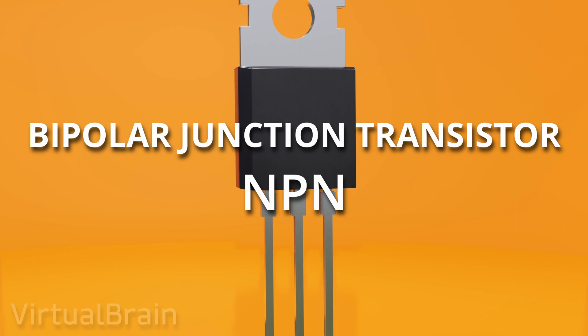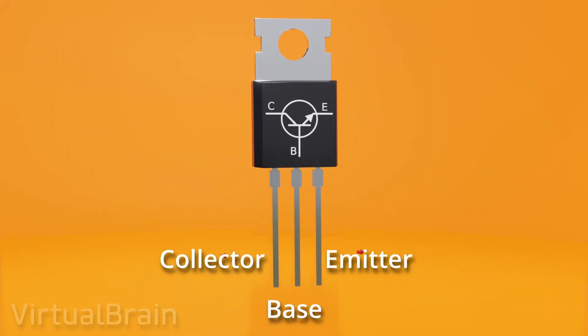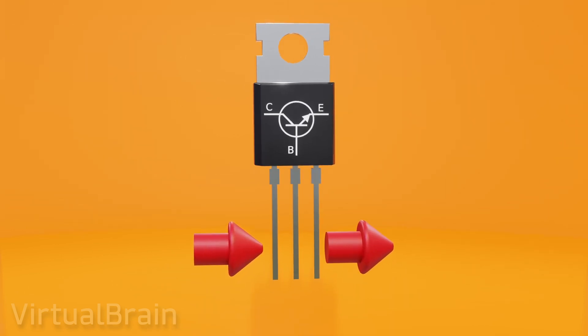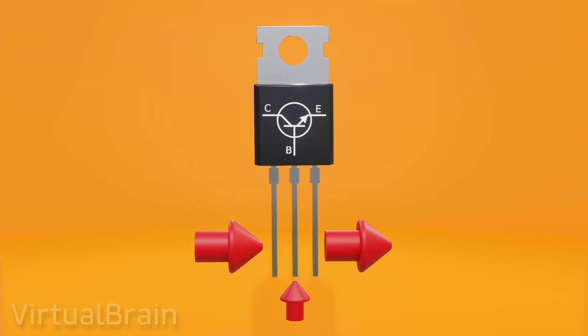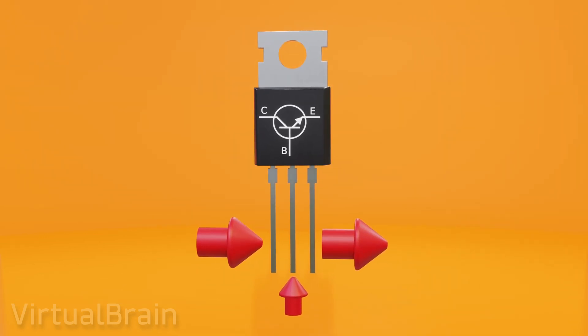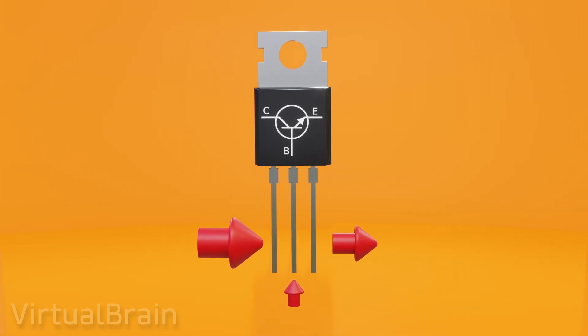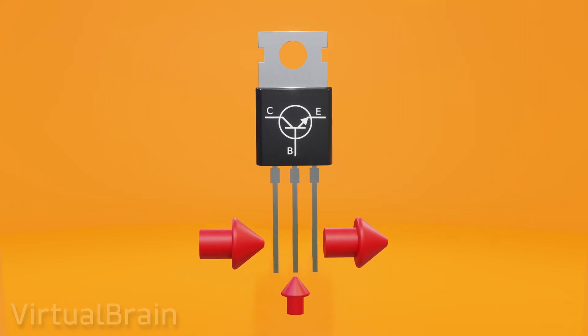And third, the NPN bipolar junction transistor. This component has three terminals, the collector, the emitter and the base. In simple terms, we can imagine this component as a switch for the current, in which the base controls the amount of current that can pass between the collector and the emitter. In this way, if there is no current in the base, the connection between the collector and the emitter acts as an open switch, while if current passes through the base, the connection between the collector and the emitter acts as a closed switch that does allow the passage of current, which also increases proportionally to the current reaching the base, at least within a certain range of values.